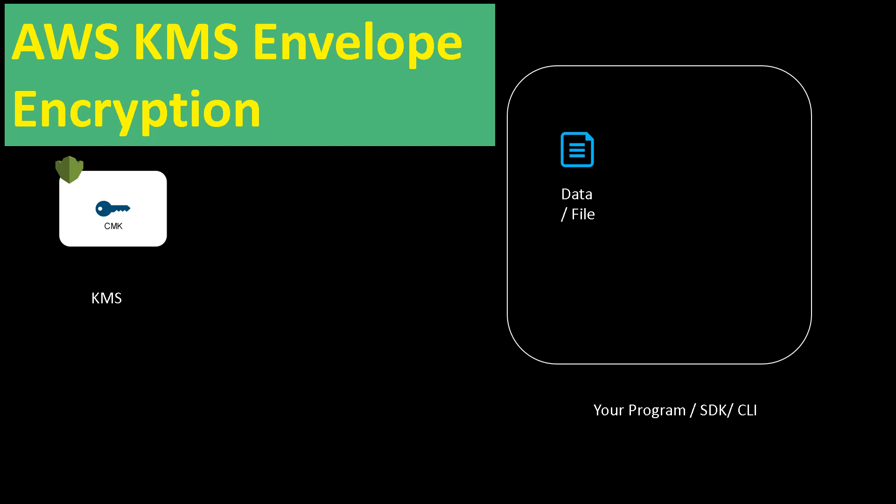Hello everyone and welcome. Today we are going to understand about AWS KMS envelope encryption and we are also going to have a demo. Imagine that you have a big data file that you want to encrypt with an AWS customer managed key. AWS KMS has a limit of 4KB file size for encryption as well as decryption, and in this case you use what is called KMS envelope encryption.